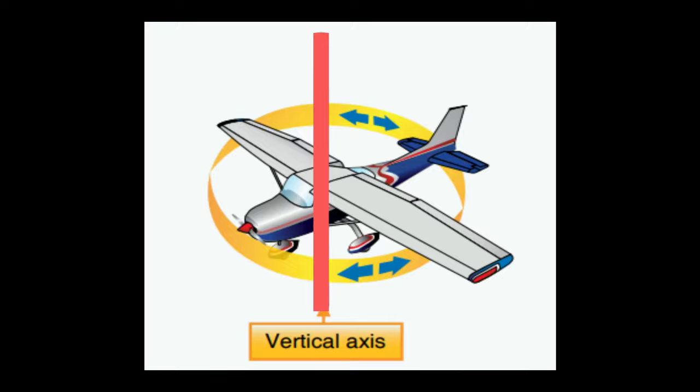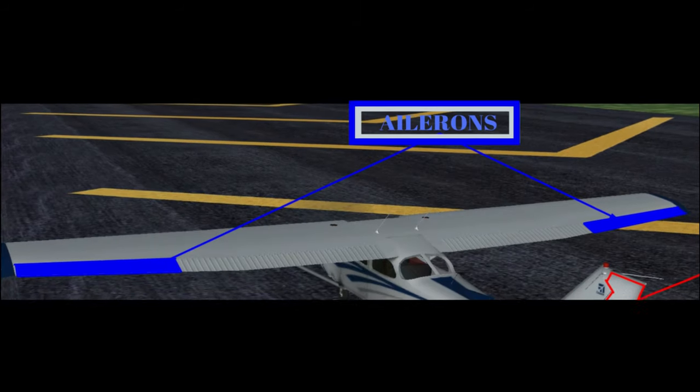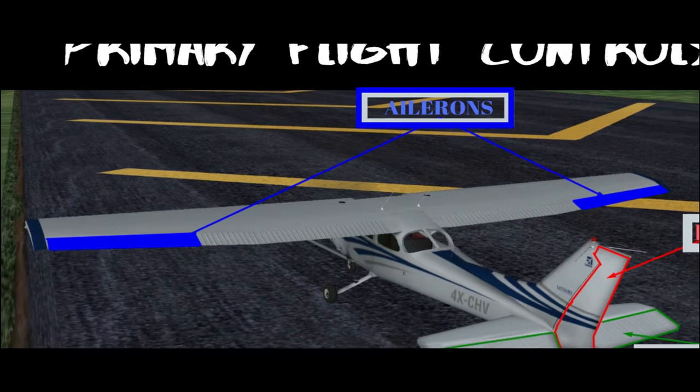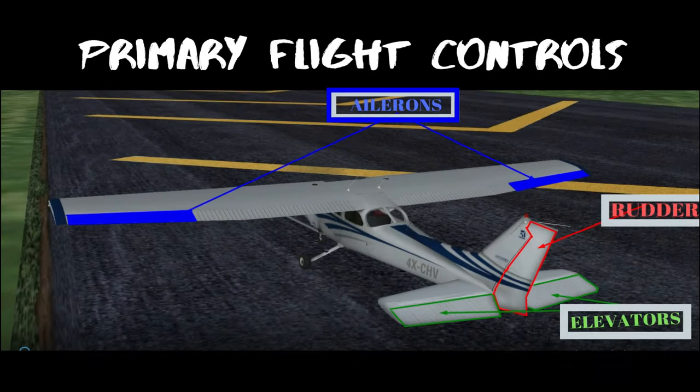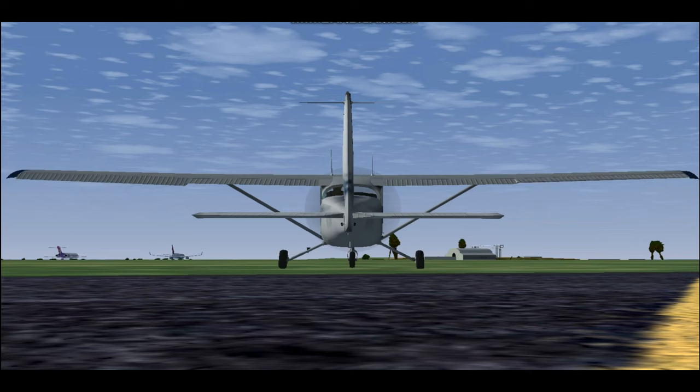With this information in mind, the flight controls and how they work are a piece of cake. Let's start with ailerons. Why ailerons? Because it will be easy later, believe me, and also because it will be in alphabetical order. Anyways, the ailerons are the flight control surfaces at the outboard trailing edge of each wing and move in opposite directions from each other.